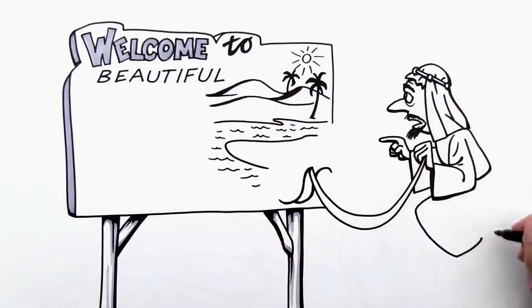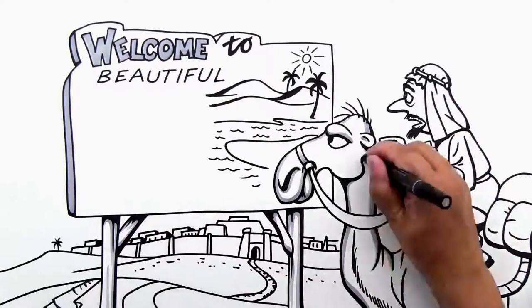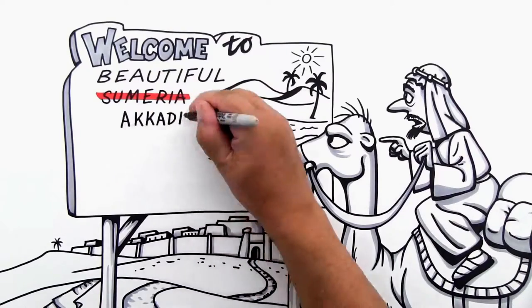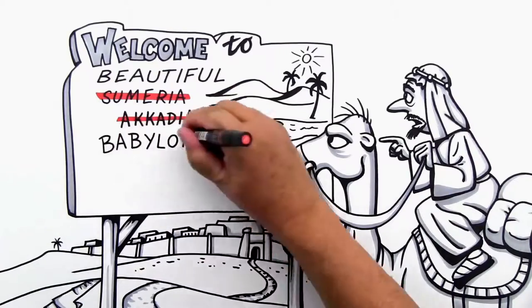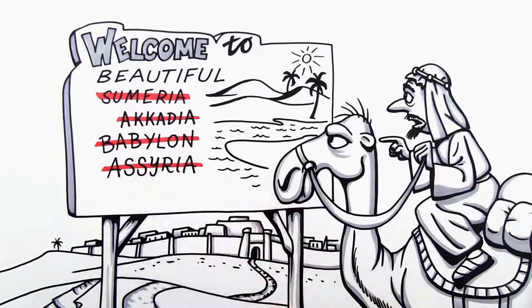Mesopotamia actually refers to an area rather than a country. At different times, it was ruled by the Sumerians, the Akkadians, the Babylonians, the Assyrians, and the Persians.